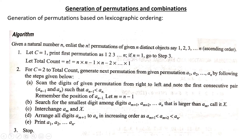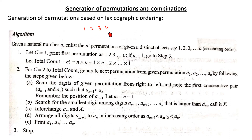The first step: scan the digits of the given permutation from right to left and note the first consecutive pair a_{n-1} and a_n such that a_{n-1} is less than a_n. Suppose we have the digits 1, 2, 3, 4. We scan from right to left and check whether a_{n-1} is less than a_n.